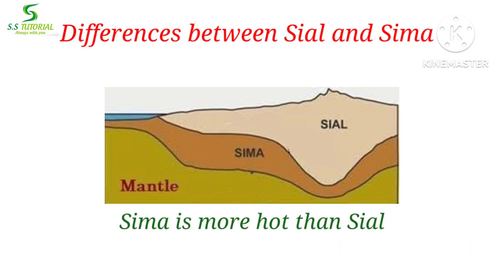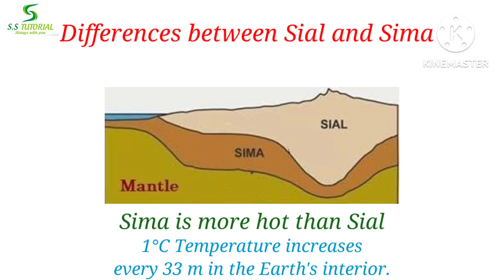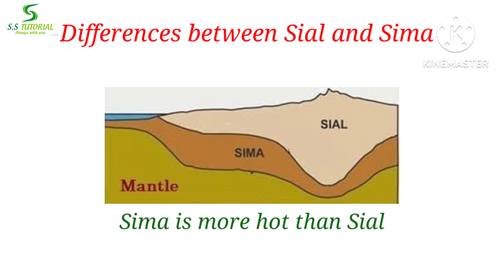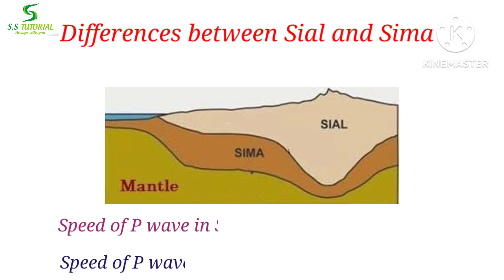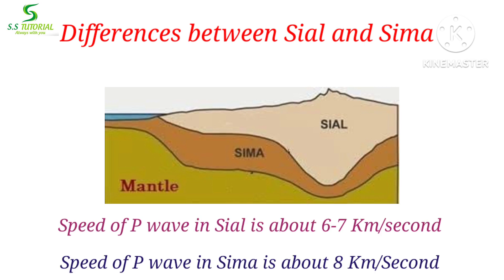The temperature of Sial is less than the temperature of Sima, because we know that temperature increases by 1 degree every 33 meters in the earth's interior. As Sial is the topmost layer of the earth crust, it is less hot than Sima, which is the second layer found below Sial. There is also a difference in the speed of earthquake waves. The speed of P waves in Sial is about 6 to 7 kilometers per second, whereas in Sima it is about 8 kilometers per second, indicating that P wave speed is higher in Sima than in Sial.